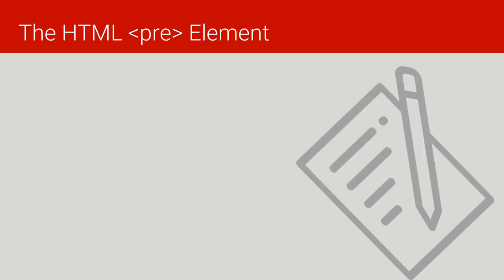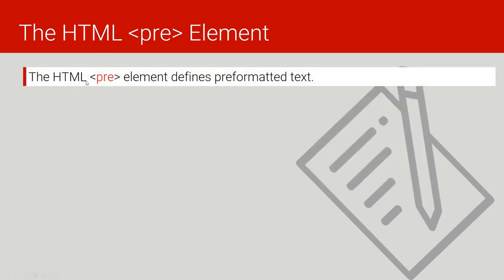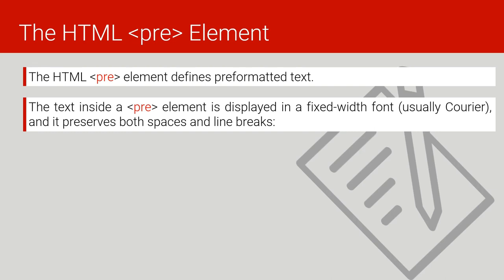We come to HTML pre-tags. Pre-tags are used to define pre-formatted text. If we have already formatted the text, we use pre-tags so HTML takes it exactly as it is. The text inside a pre element is displayed with a fixed-width font — usually Courier — and it preserves both spaces and line breaks without altering the formatting.